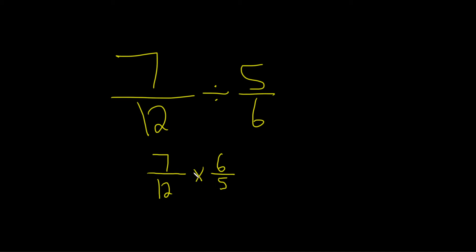So 7 and 5 have no common factors other than 1, so nothing useful there. 6 and 12 — 6 goes into 6 one time, and 6 goes into 12 two times. So we put a line through it, put a 1, put a line through it, put a 2.